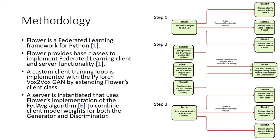Moving on to the federated training methodology. To accomplish this, the FLOWER library is mainly used, which provides a federated learning framework for Python. FLOWER provides base classes that allow you to implement custom federated learning clients and servers. For this project, a custom client training loop is implemented using the PyTorch Vox-to-Vox GAN by extending FLOWER's base client class. Additionally, a server is instantiated which uses FLOWER's implementation of the FedAverage algorithm to average out model weights.